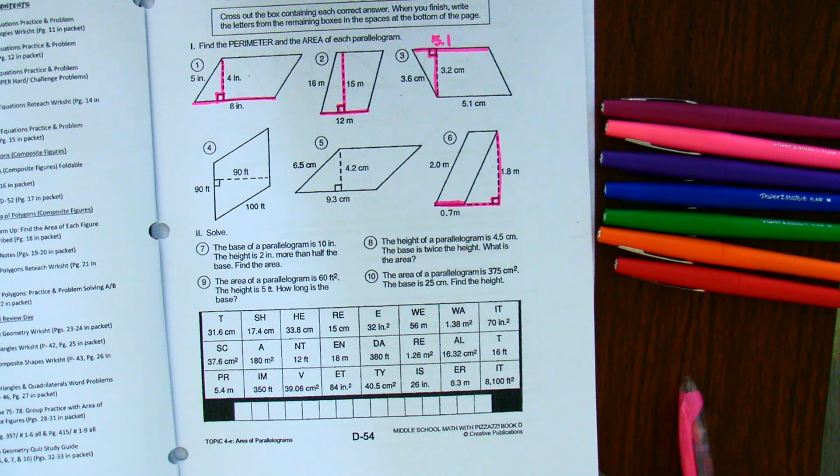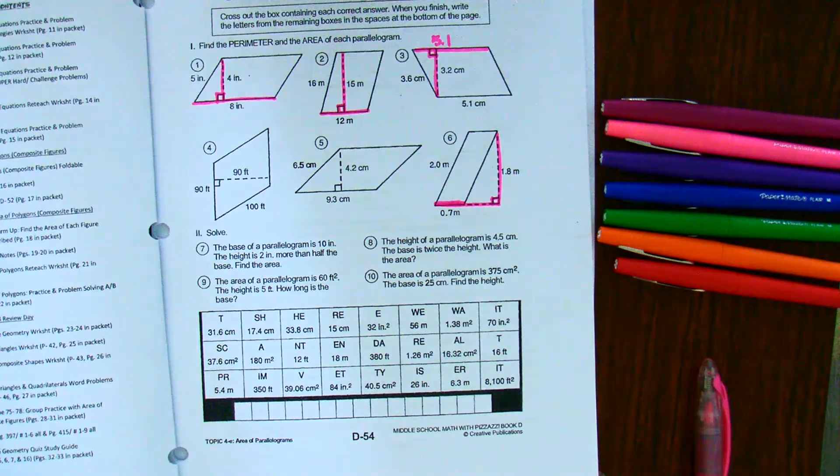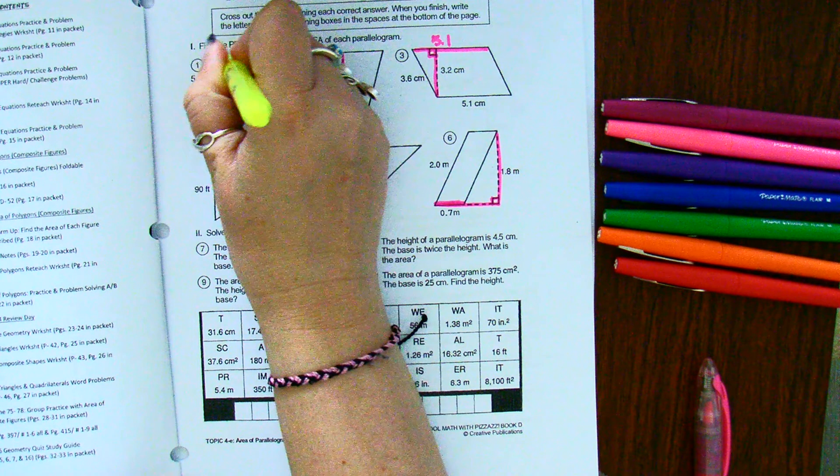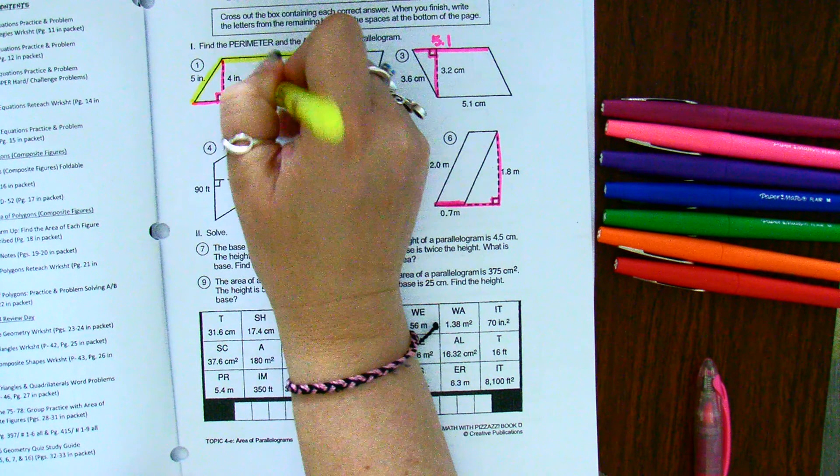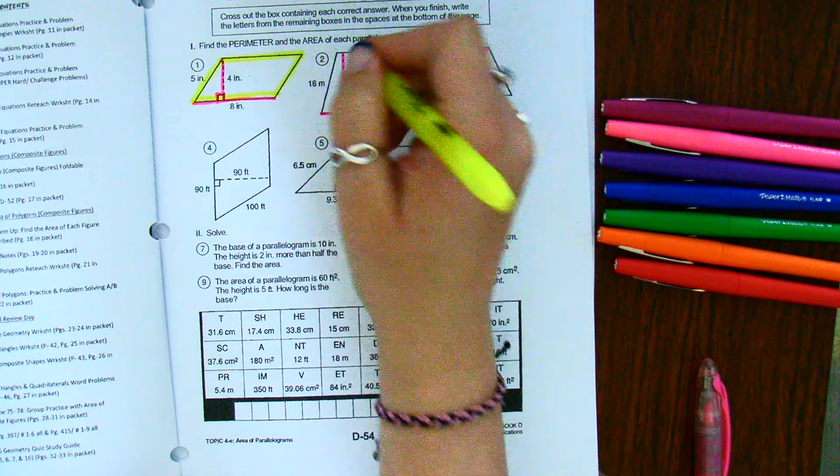In regards to the perimeter of a figure, that's along the outside edge. So that's where you're going to do all along the outside. So I'm not taking into account that four. It's just along the outside.